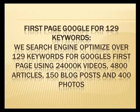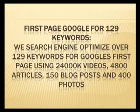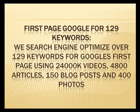We also include the first page of Google for 129 keywords. We search engine optimize over 129 keywords for Google's first page using 24,000 videos, 4,800 articles, 150 blog posts, and 400 photos.